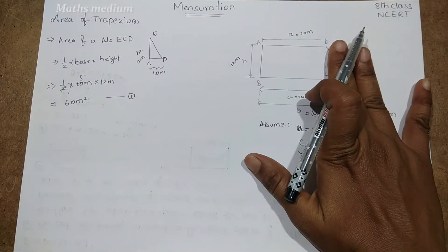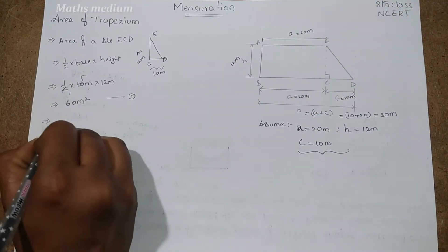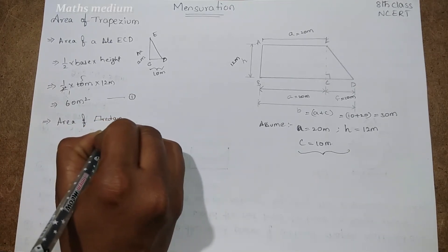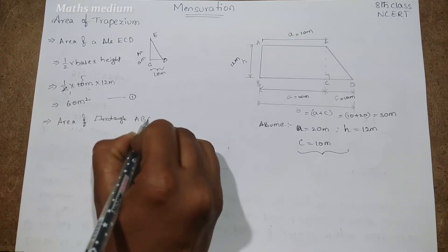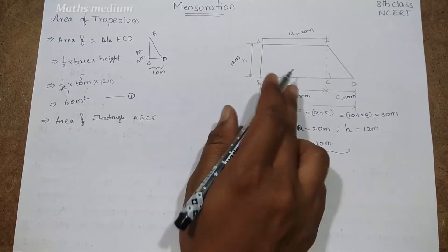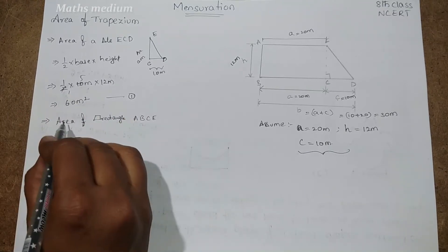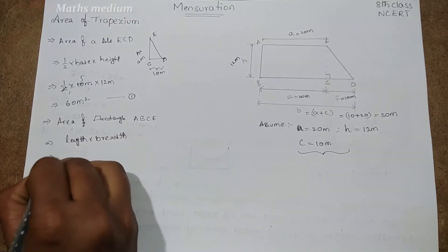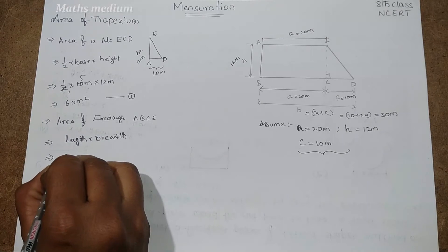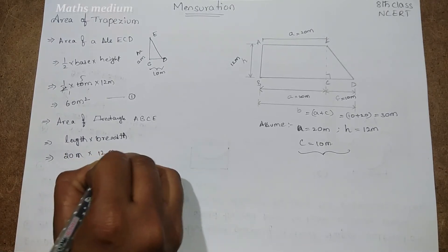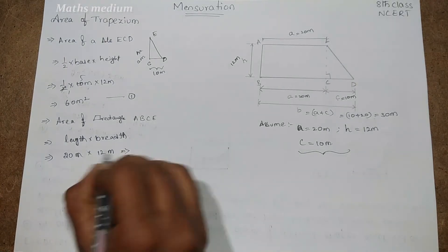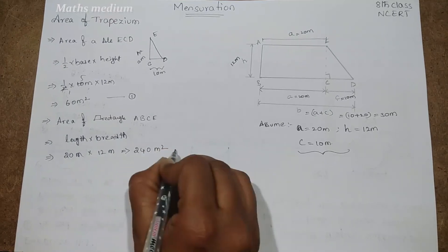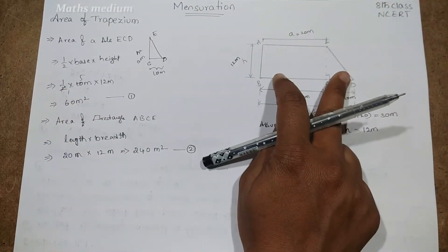Next, we have rectangle ABCE. Area of a rectangle = length × breadth. Here height and a are given, so 20 meters × 12 meters = 240 square meters.